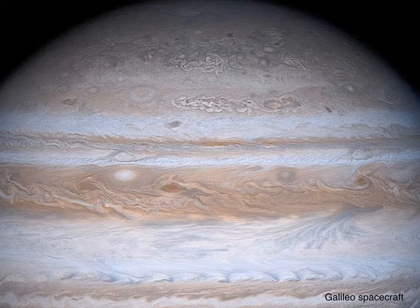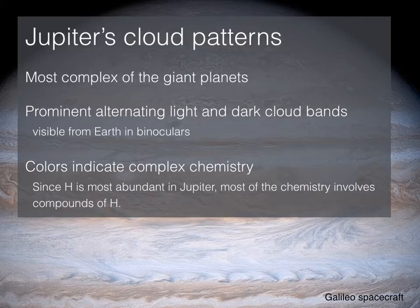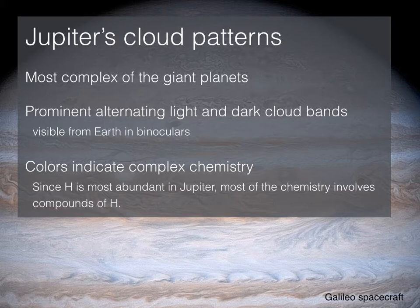There's a lot of really interesting stuff going on, but mostly we're talking about a very complex chemistry. Remember, hydrogen is the most abundant element in Jupiter, so most of the chemistry involved is going to be a manifestation of hydrogen. There'll be some compounds of hydrogen reacting with other compounds, thus giving us these interesting colors.